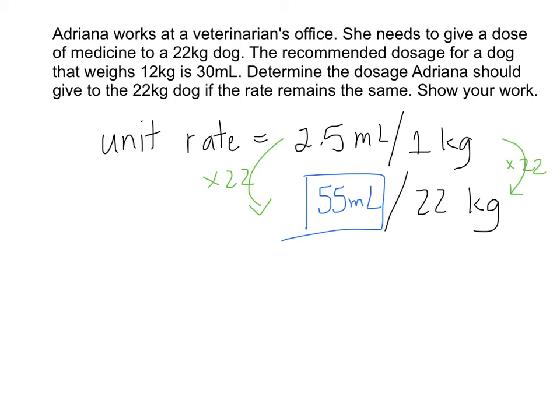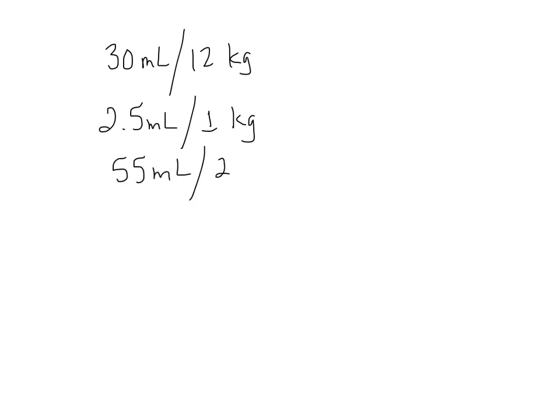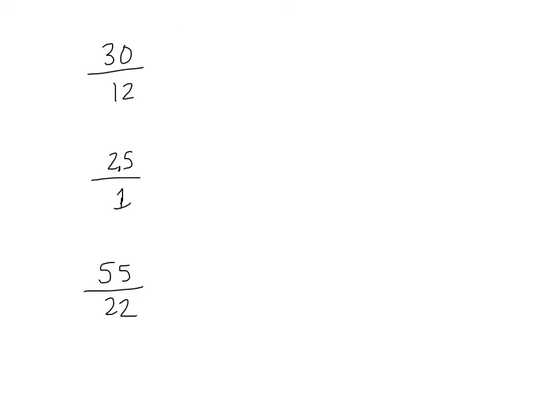Well, how do we know that our answer is correct? The question told us that the rate must remain the same, which means all of these rates should be equivalent. Let's check to make sure they are. The question told us that the rate was 30 milliliters for every 12kg. We found a unit rate of 2.5 milliliters for every 1kg, which means that you need 55 milliliters for every 22kg. I've chosen to rewrite all my rates as fractions: 30 over 12, 2.5 over 1, and 55 over 22.